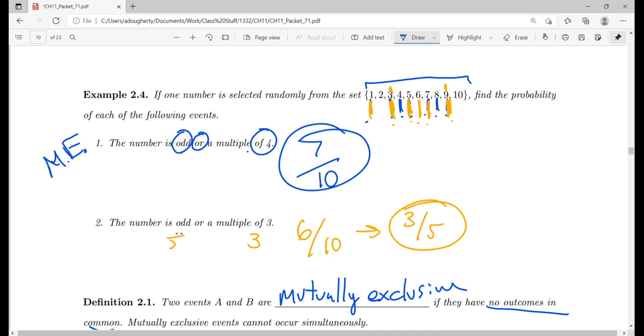Whereas here, there's plenty of odd multiples of 3: 3, 9, 15, 21, 27. These are all odd multiples of 3. There are also even multiples of 3, but the point is those two events could occur simultaneously, so they are not mutually exclusive.